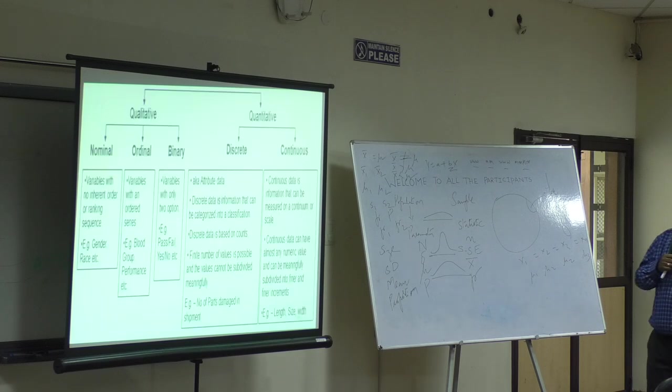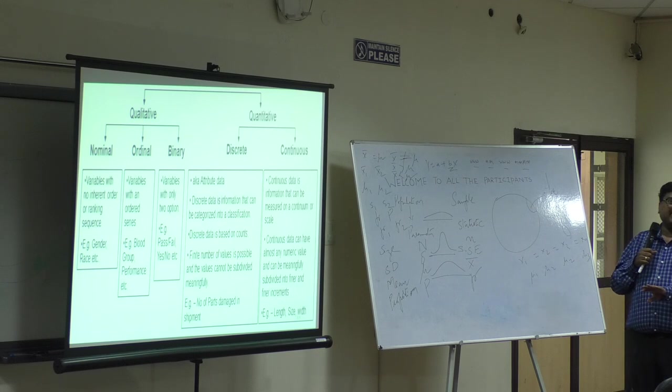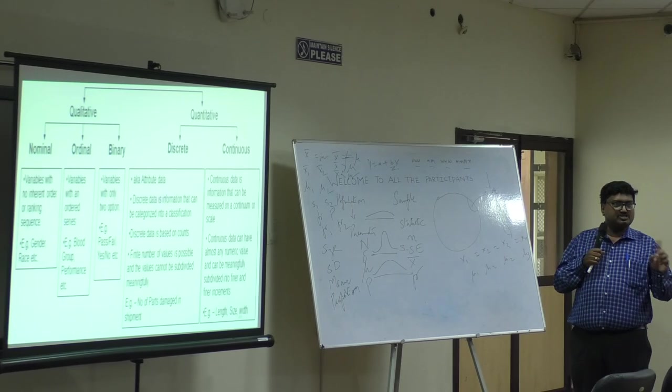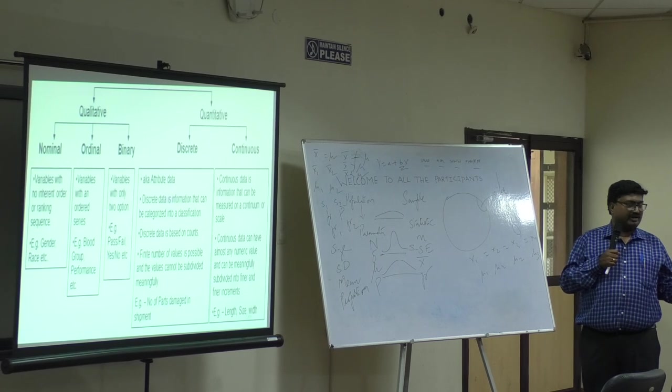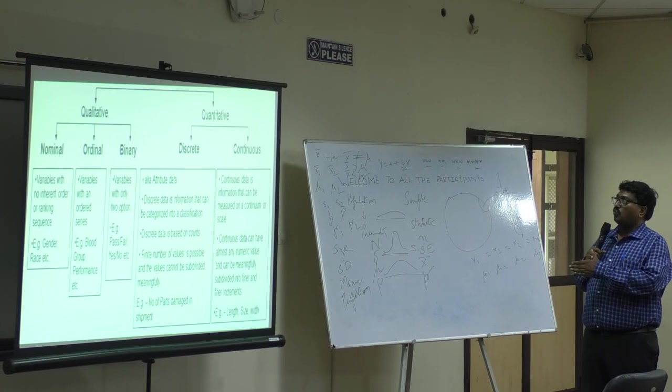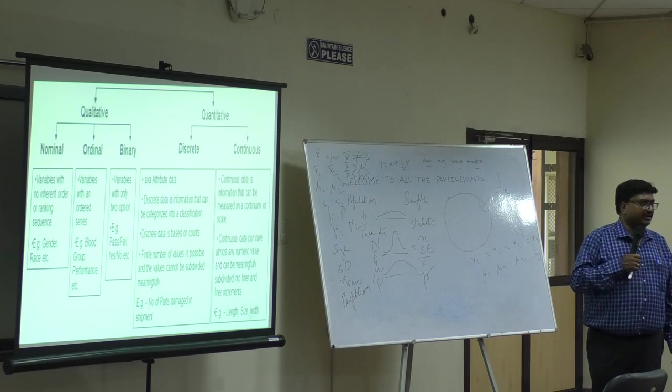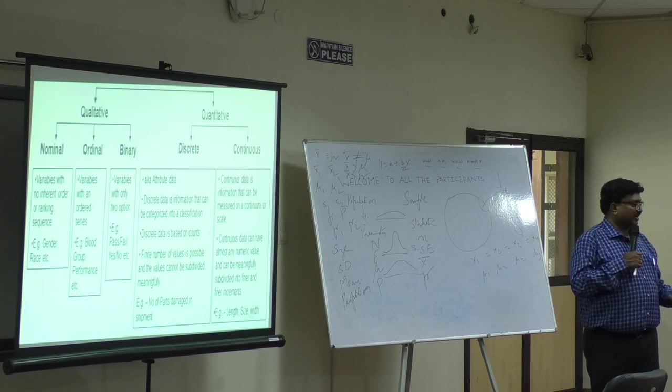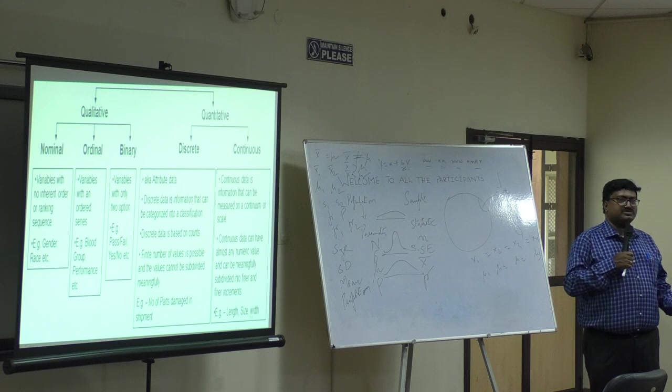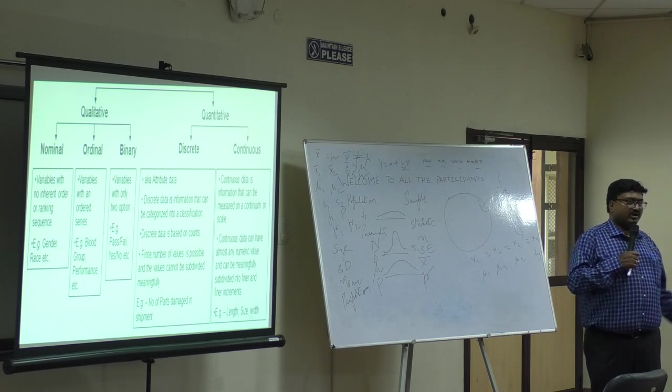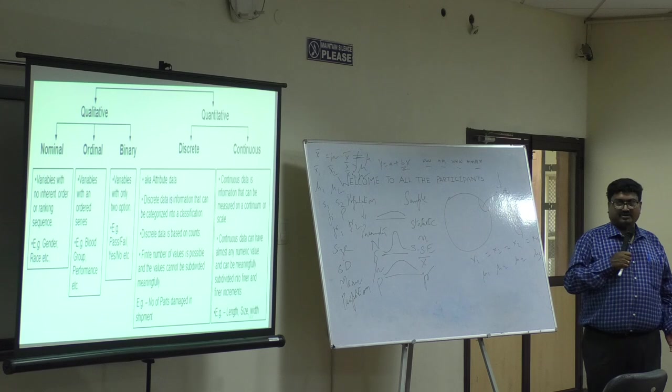Now the qualitative part, you have ordinal, binary. What is binary? There are only two responses: yes, no, pass, fail, live, dead. There are only two things. Like in binary, we say zero, one in computer kind of a thing. And in quantitative, we say discrete and continuous. Discrete - no decimals, no fractions. When I say continuous, it can also involve decimal related figures in it.